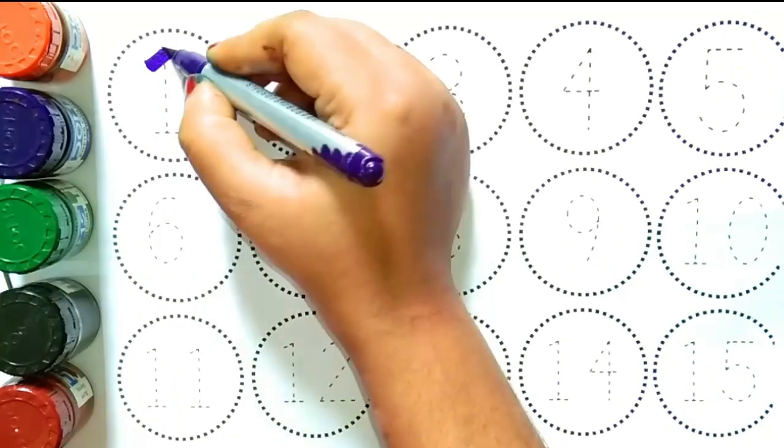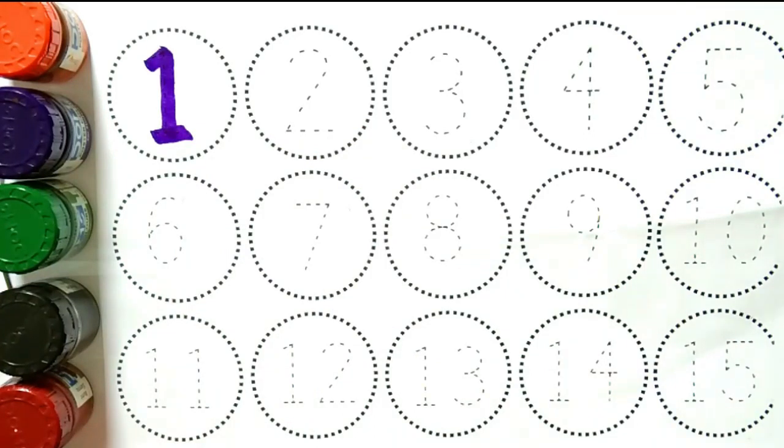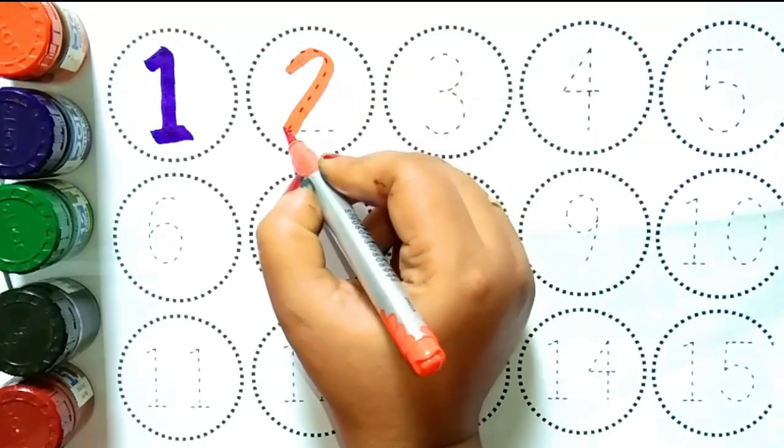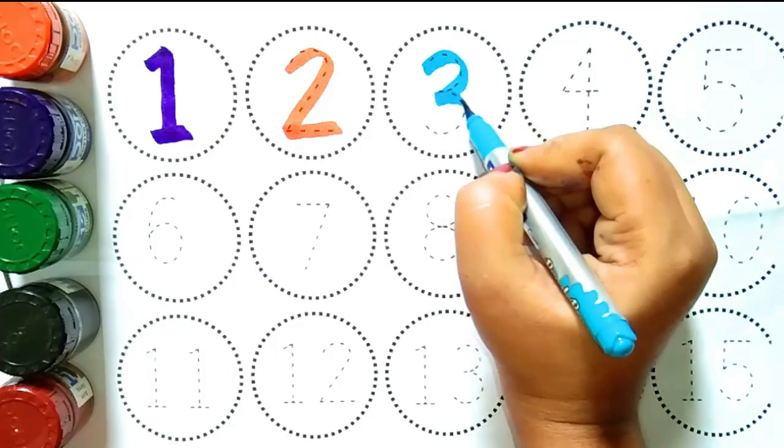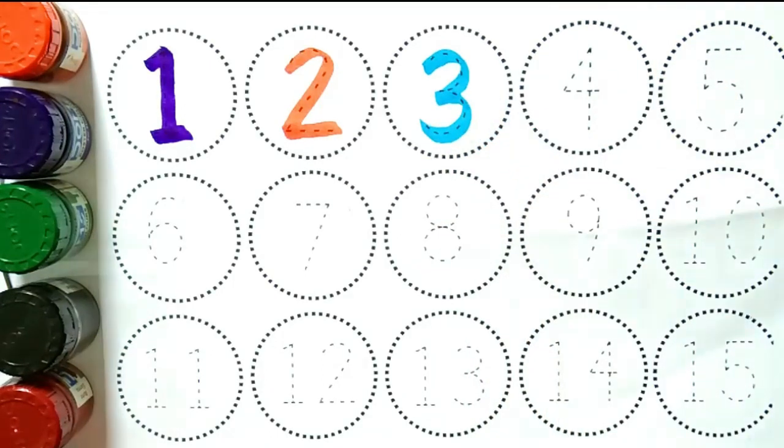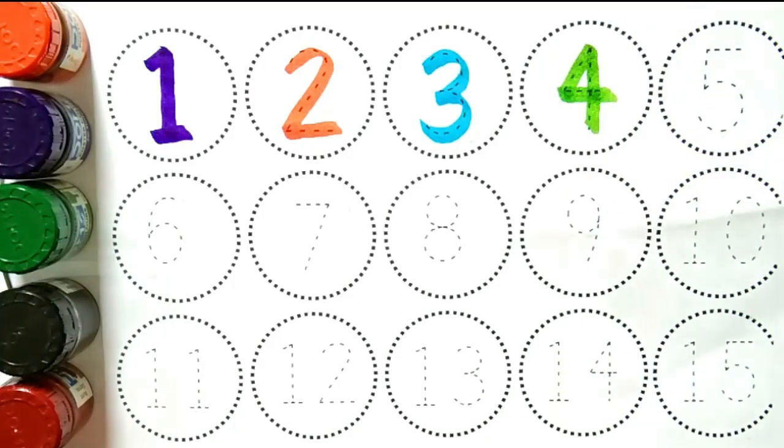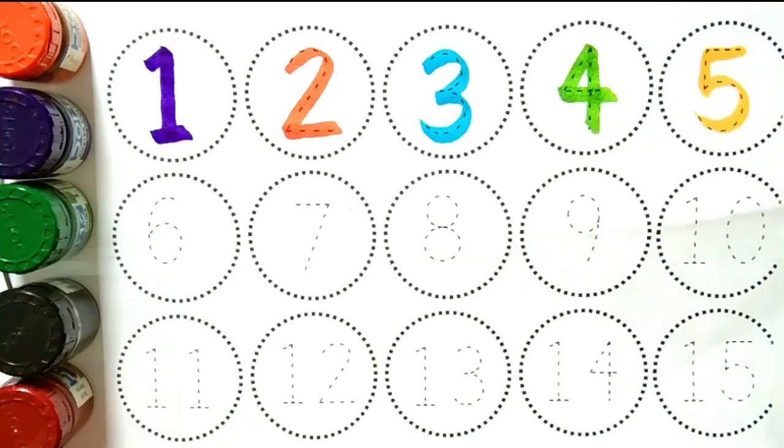Yeh hai number 1. Kya hai kids? Yeh hai number 1. 1 ke baad aata hai 2. Yeh hai number 2. Kya hai kids? Yeh hai number 2. 2 ke baad aata hai 3. Yeh hai number 3.